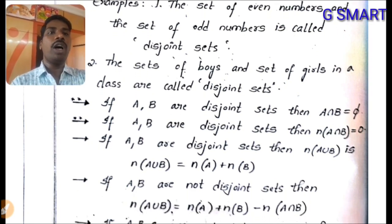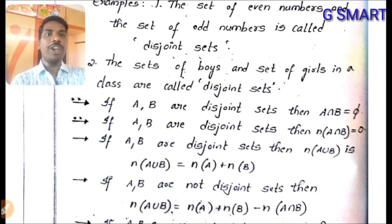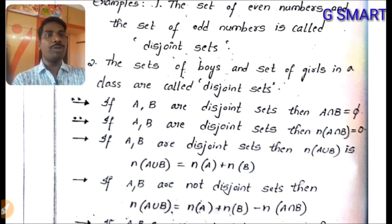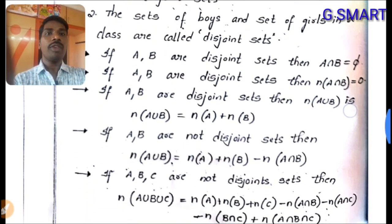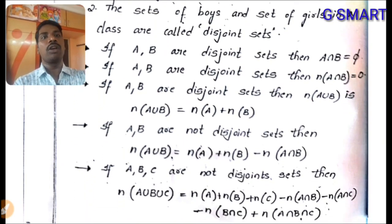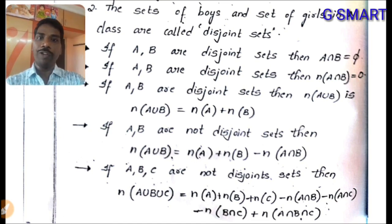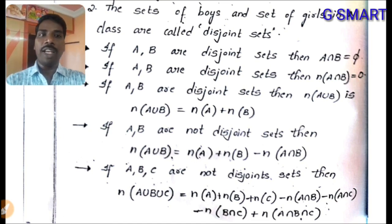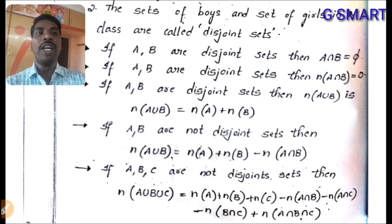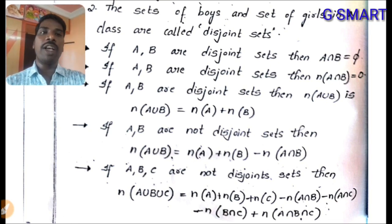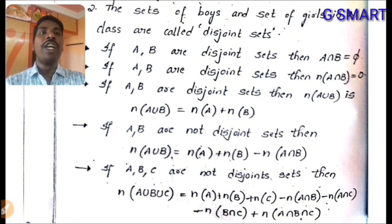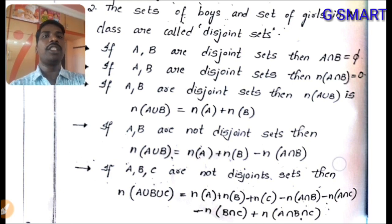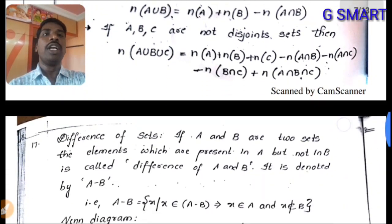Key formulas: if A and B are not disjoint, then n(A ∪ B) = n(A) + n(B) − n(A ∩ B). For three sets: n(A ∪ B ∪ C) = n(A) + n(B) + n(C) − n(A ∩ B) − n(A ∩ C) − n(B ∩ C) + n(A ∩ B ∩ C). This is the most important formula.